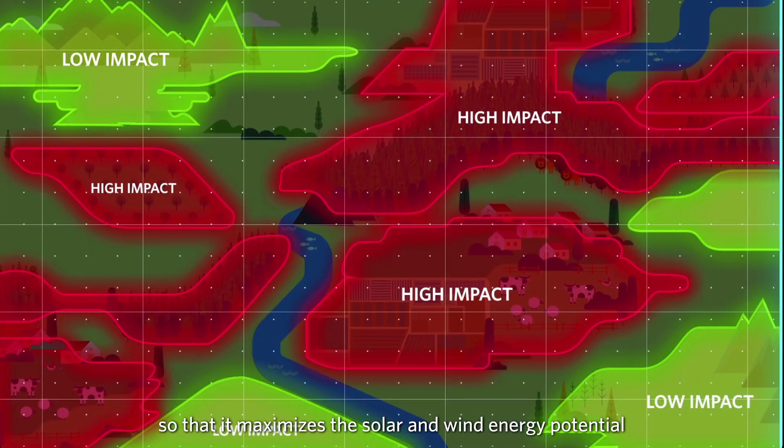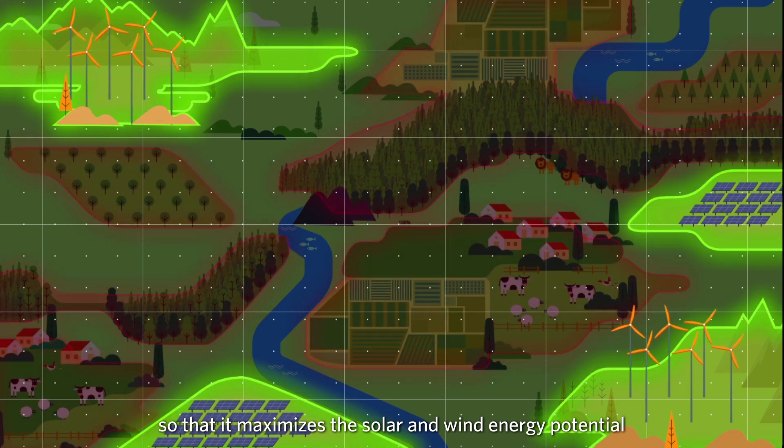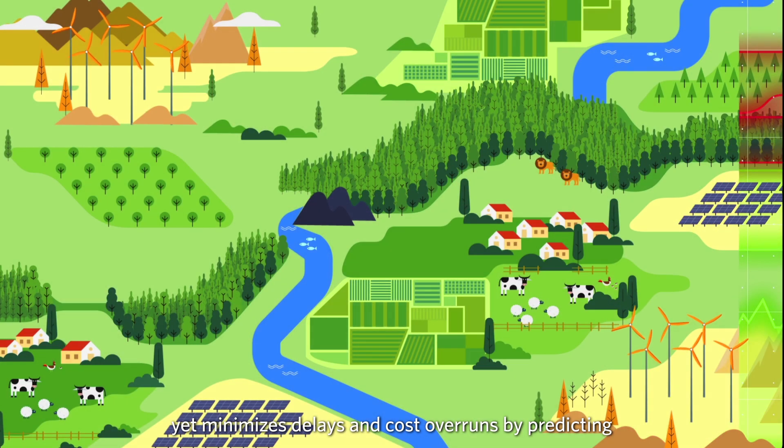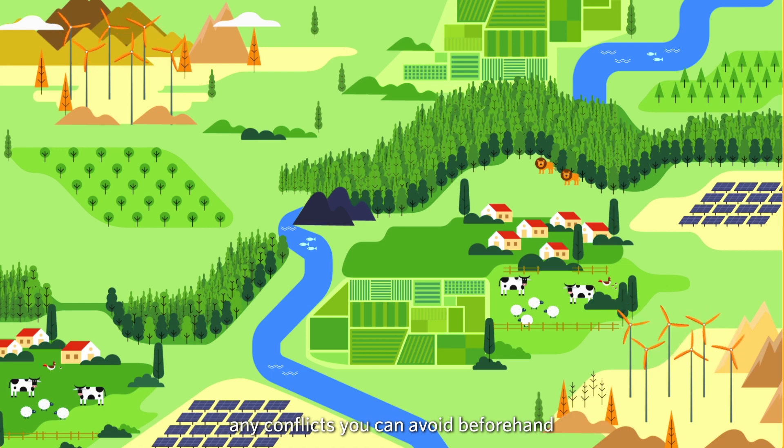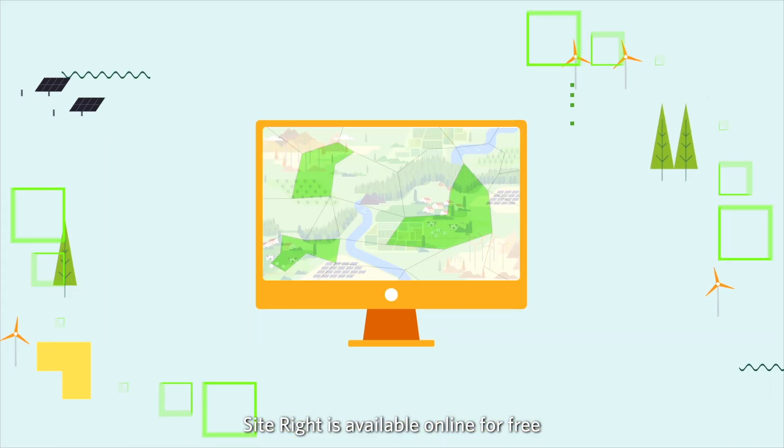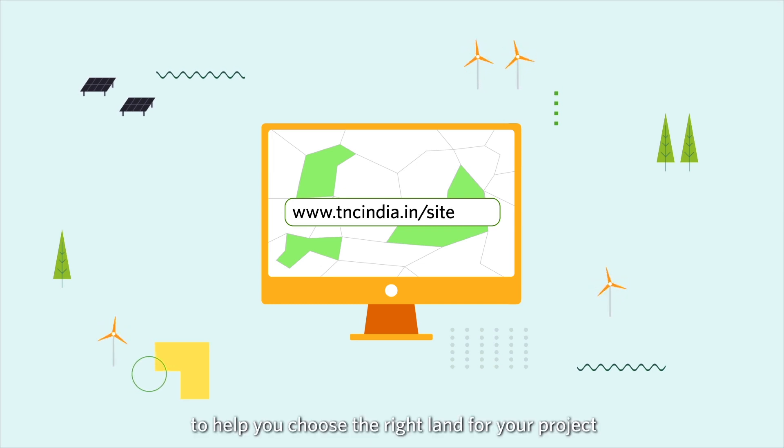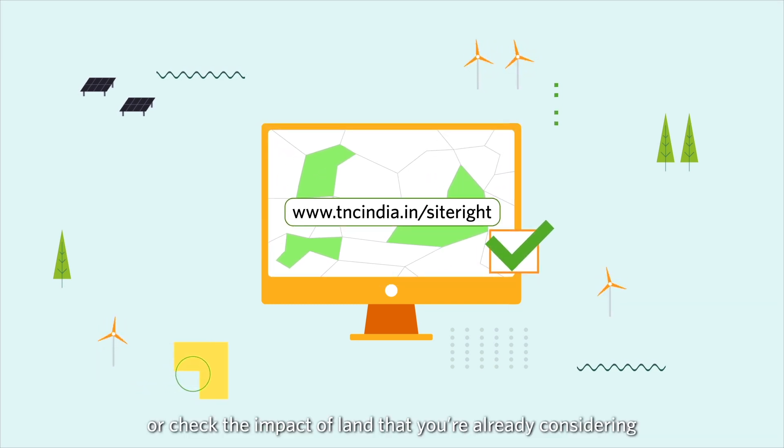so that it maximizes the solar and wind energy potential yet minimizes delays and cost overruns by predicting any conflicts you can avoid beforehand. SiteRight is available online for free to help you choose the right land for your project or check the impact of land you've already considered.